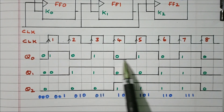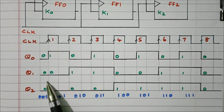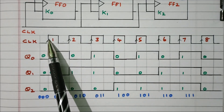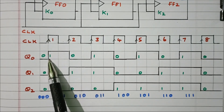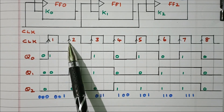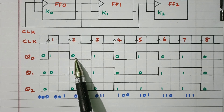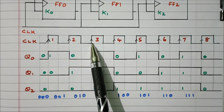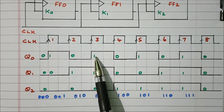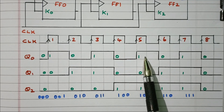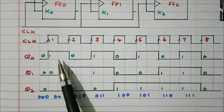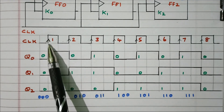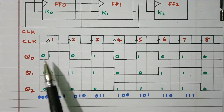Every positive edge of the clock pulse changes the state of the first flip-flop. Initially all outputs are zero: Q0, Q1, and Q2. During the first clock pulse, Q0 changes from zero to one and is maintained until the next positive edge, then toggles from one to zero, and so on: zero, one, zero, one — because J0 and K0 input is always high, so whenever a clock pulse is received the output toggles.